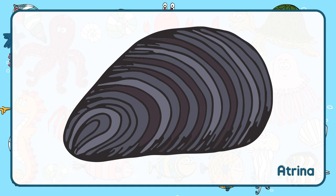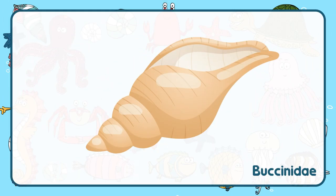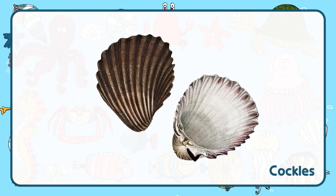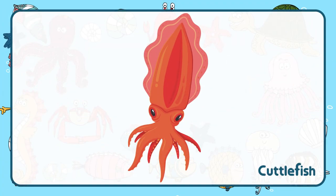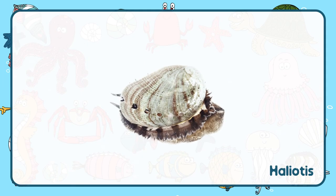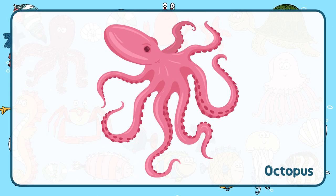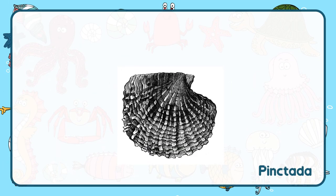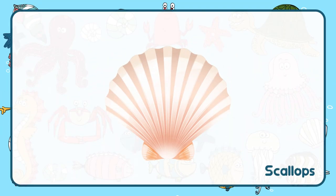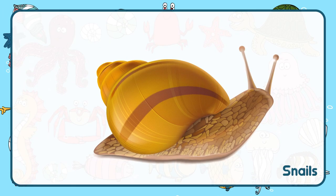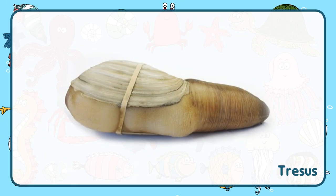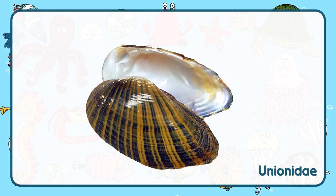Ammonites. Atrina. Bacinidae. Chitinidae. Clams. Cockles. Cuttlefish. Freshwater Limpets. Giant Squid. Haliotis. Octopus. Oysters. Pinctada. Pinna. Scallops. Slugs. Snails. Squid. Tresus. Tusk Shells. Unionidae.